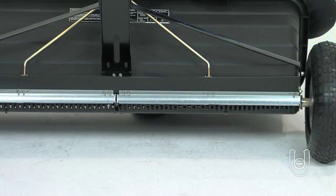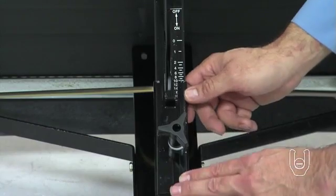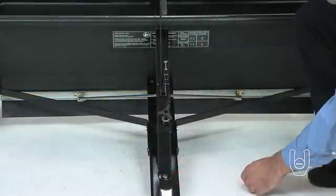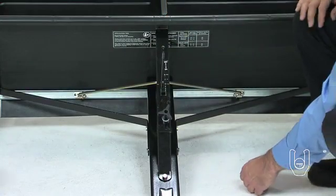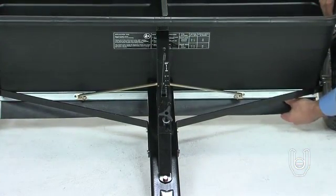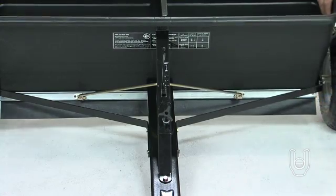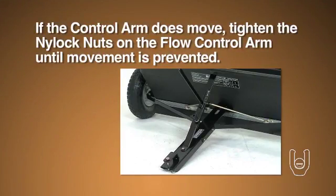It is recommended that you also check the hopper flow plates for proper tension. To do this, first set the flow control gauge at a mid-range setting. Then move the flow control arm up against the gauge and press firmly against the front of the flow plates at the bottom of the hopper. The flow control arm should not move. If the control arm does move, tighten the nylock nuts on the flow control arm until movement is prevented.